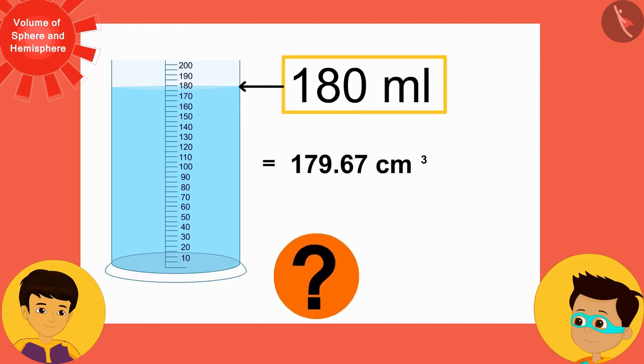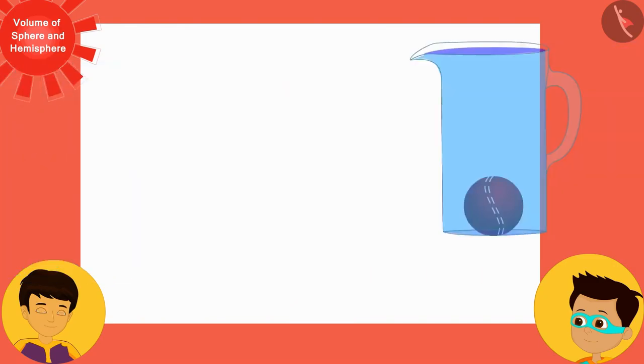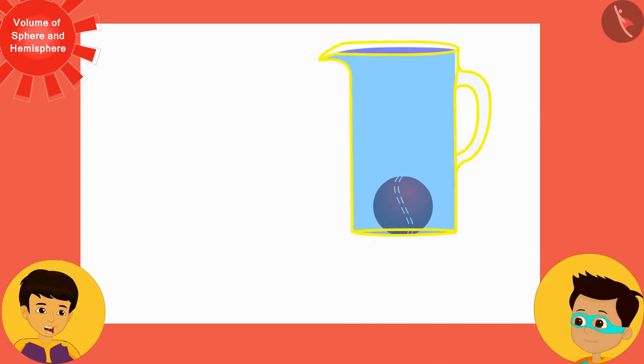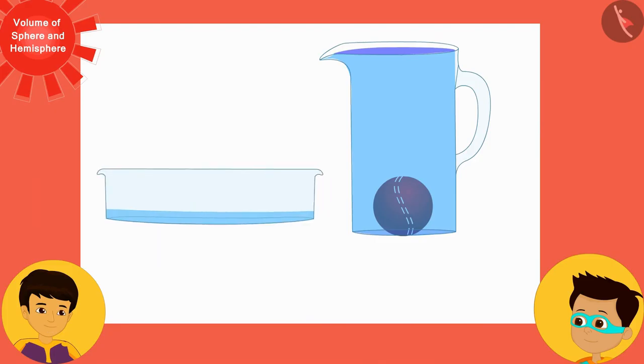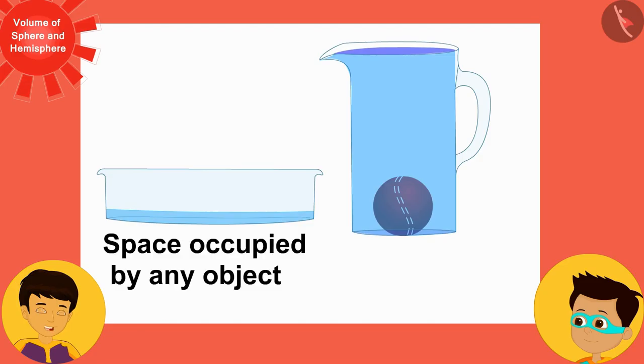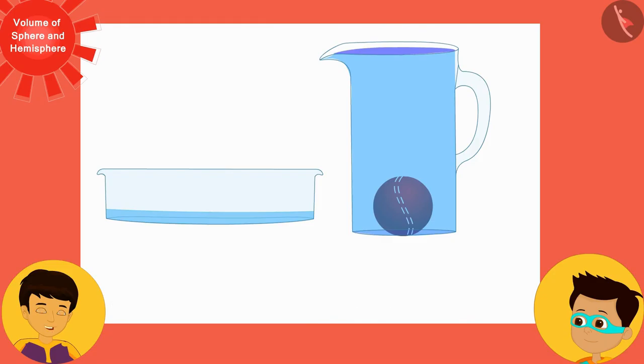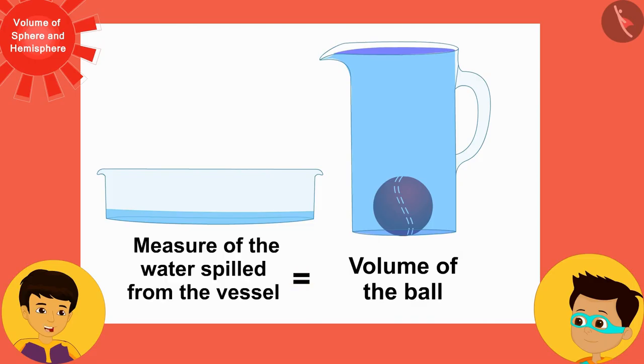Why so? This is because the ball occupies some space in this vessel. The amount of space the ball occupies in this vessel is the amount of water spilled from the vessel and deposited in the container. And as you know, the space occupied by any object is equal to its volume.